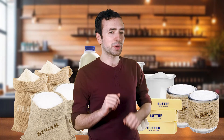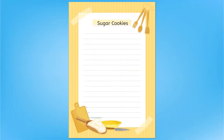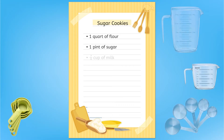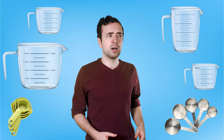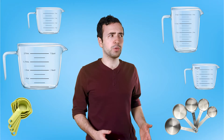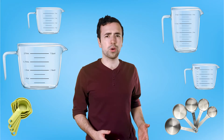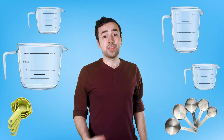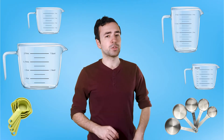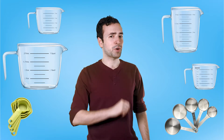Let's take a peek at one of the recipes. These sugar cookies need one quart of flour, one pint of sugar, seven-eighths of a cup of milk, and five fluid ounces of melted butter. Which tool do we use to measure a quart? And ounces — how do we measure those? I think we need to learn more about the different measuring tools Mia has in her bakery, so these treats come out just right.